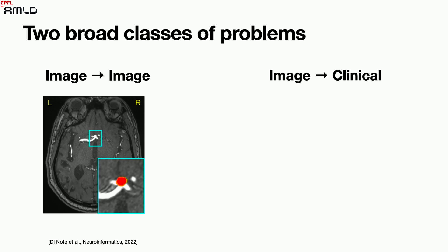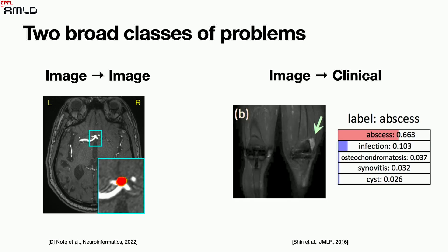Here is an example from detecting an aneurysm, which is an important task for neuroradiologists. Aneurysms are small deviations in the arterial circulation of the brain, detected for example with time-of-flight magnetic resonance angiography. They're very difficult to see — I cannot find them, but for radiologists it's obvious. The second type of problem is image-to-clinical: you have some abnormality on an image and want to know whether it's a cyst, an abscess, or something else — in this case, most likely an abscess.